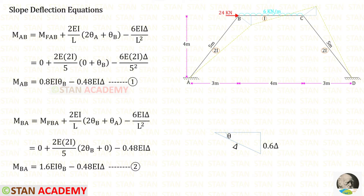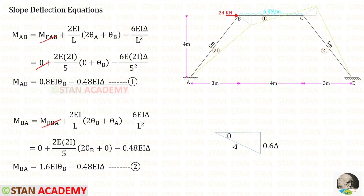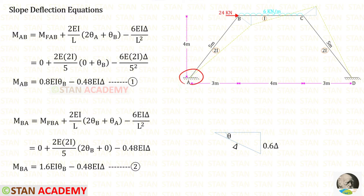Now let us start making the slope deflection equations. First, for member AB: since this member is subjected to sway delta, we add sway moments to the equations. Since sway occurs towards the right, the sway moments are negative. Both fixed end moments are 0. Length of AB is 5, moment of inertia is 2I. At point A there is a fixed support, so theta_A = 0. This gives us two equations for member AB.